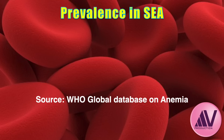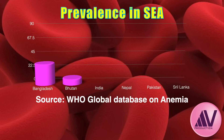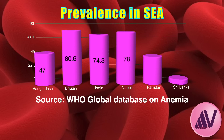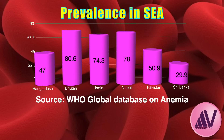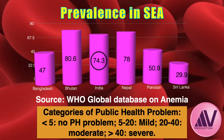The WHO global database on anemia shows the prevalence of anemia in Southeast Asia. As seen in this chart, it is a severe public health problem in all Southeast Asian countries except Sri Lanka. Bhutan has the highest incidence; India is not far behind at 74.3%. Prevention and treatment of iron deficiency anemia is a severe public health problem across the region, and all countries fall in the severe category.